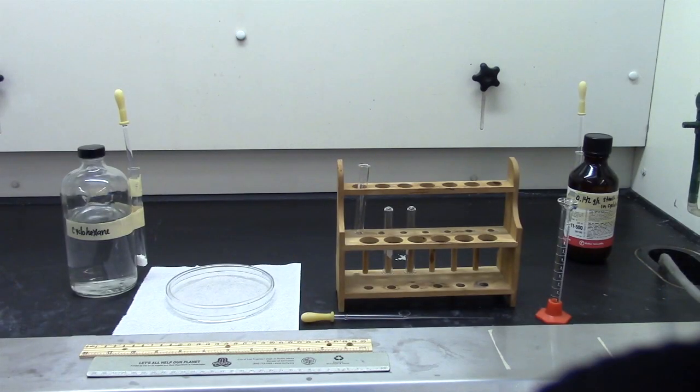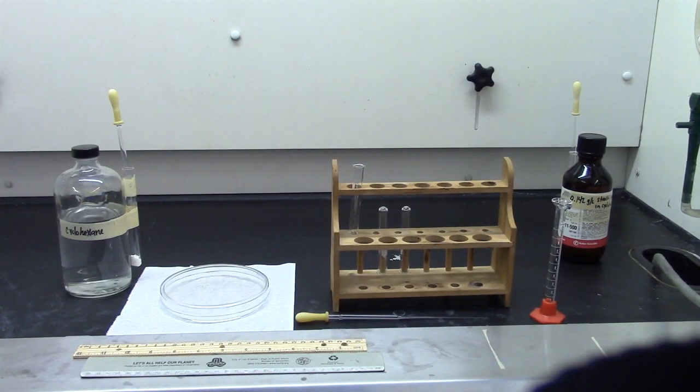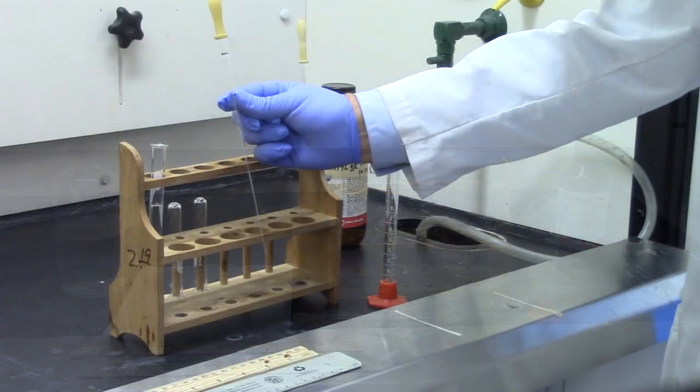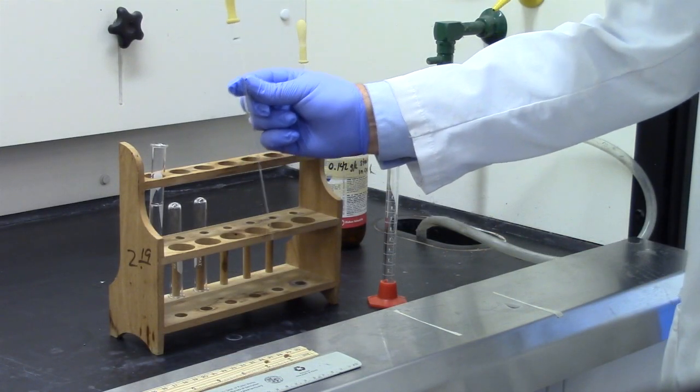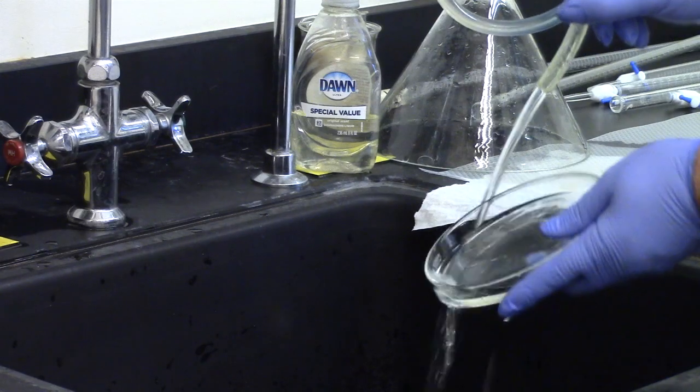This experiment requires a calibrated pipette and a specially cleaned petri dish. To save time, it's best to have one partner calibrate their pipette while the other partner washes their petri dish.